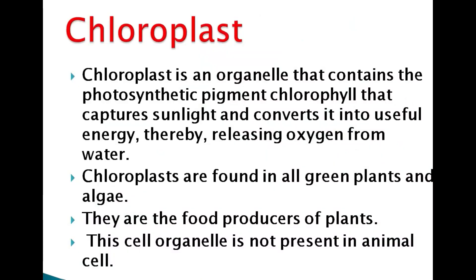Chloroplast is an organelle that contains the photosynthetic pigment chlorophyll, which captures sunlight and converts it into chemical energy, releasing oxygen from water. Chloroplasts are found in all green plants and algae. They are the food producers of the plant.